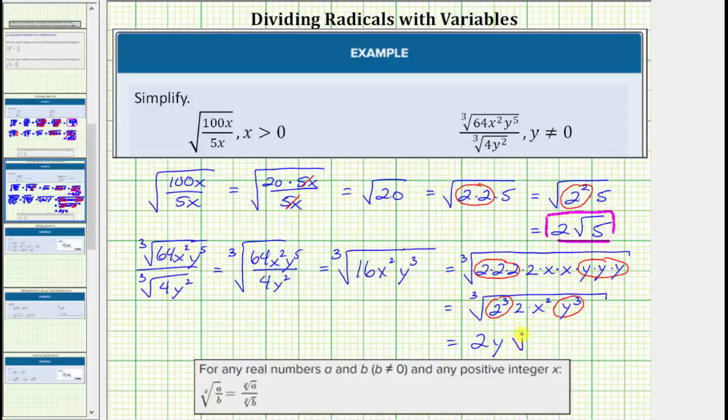And we still have the cube root of 2x squared. This is the simplified radical expression. And because the index is odd, there's no need for an absolute value.